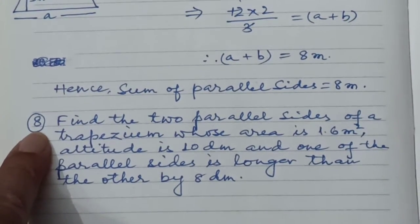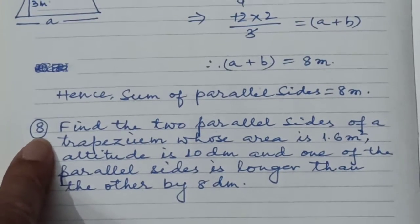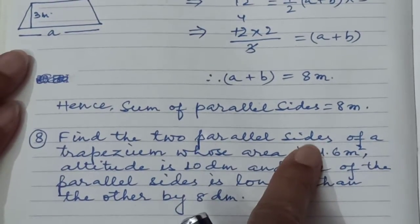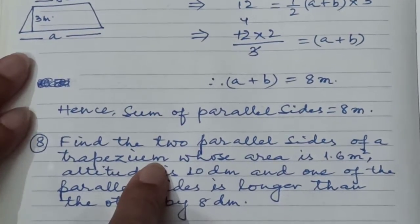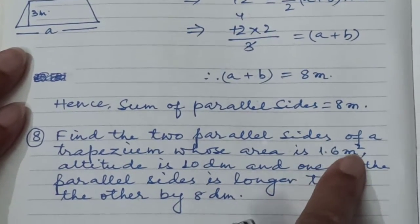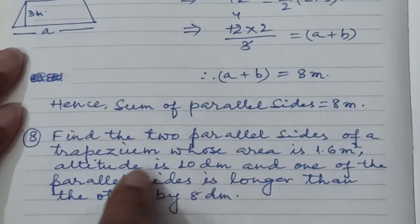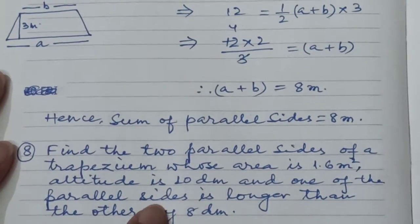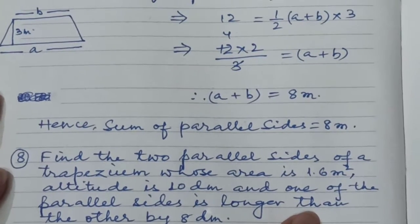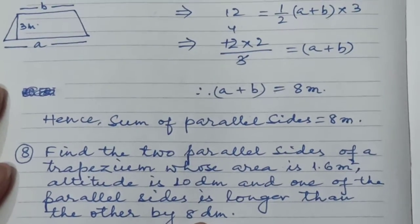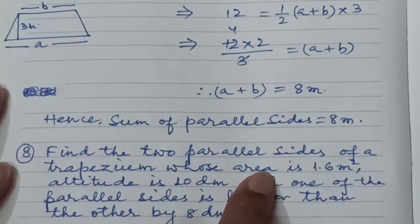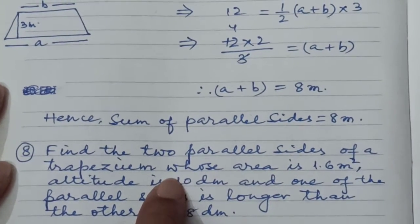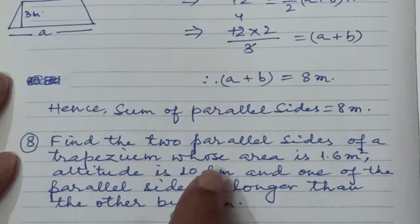Now take question number 8. Read carefully: Find the two parallel sides of a trapezium whose area is 1.6 square meters, altitude is 10 dm, and one of the parallel sides is longer than the other by 8 dm. The area is given in square meters but altitude and side difference are given in dm, so we need to convert units.